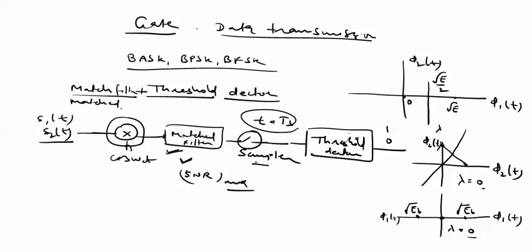The importance of the match filter is that it maximizes the SNR at a particular point T equals capital T, or TB, the bit duration. A receiver that is optimum in this sense minimizes the probability of making an error. The purpose of the match filter is maximization of the output SNR. The pure definition: when a linear filter is designed to maximize output SNR for a given input, it is called a match filter.